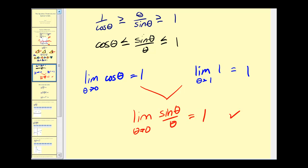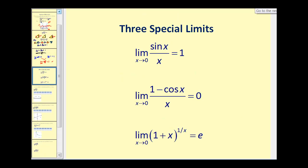There are two other special limits we want to discuss briefly — we won't prove them, but we'll verify them. The first is the limit we just found. Next, the limit as x approaches zero of one minus cosine x divided by x is equal to zero. And lastly, the limit as x approaches zero of one plus x raised to the power of one divided by x is equal to Euler's number, e.